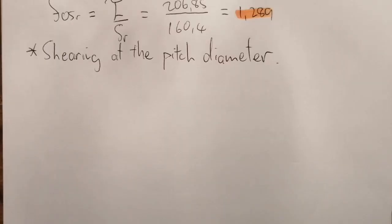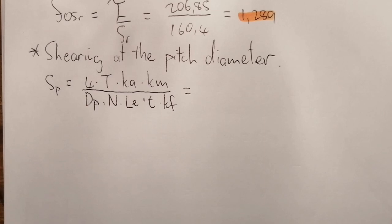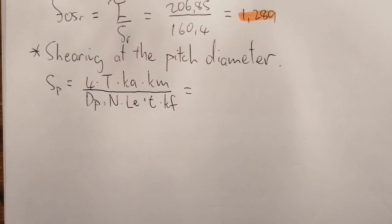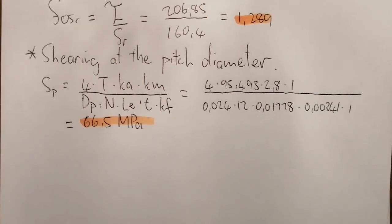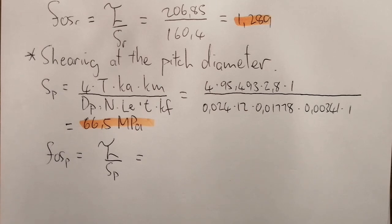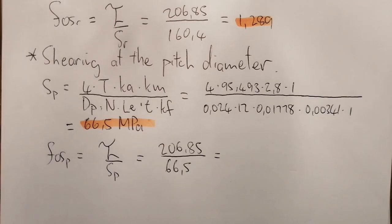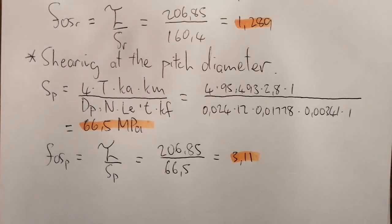Shearing at the pitch diameter: SP equals 4 times torque times KA times KM divided by pitch diameter times number of splines times effective length times spline thickness, then times KF. Thus SP equals 66.5 MPa. The factor of safety is allowable shear divided by 66.5, giving a factor of safety of 3.11.